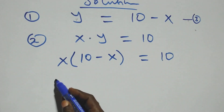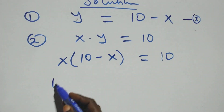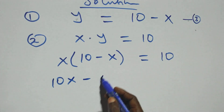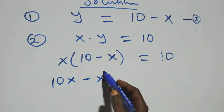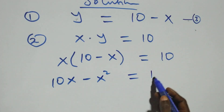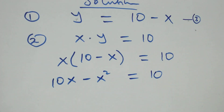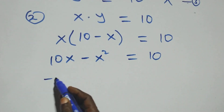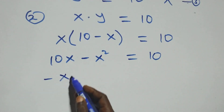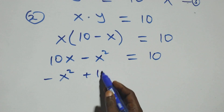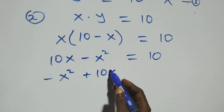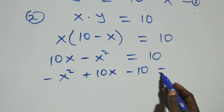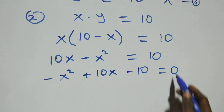We open the bracket: x times (10 minus x) gives us 10x minus x squared equals 10. Rearranging, we have minus x squared plus 10x minus 10 equals 0.